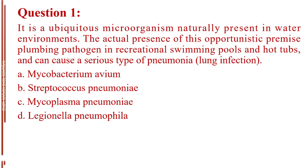Question number one. It is a ubiquitous microorganism naturally present in water environments. The actual presence of this opportunistic premise plumbing pathogen in recreational swimming pools and hot tubs can cause a serious type of pneumonia or lung infection. A. Mycobacterium avium. B. Streptococcus pneumoniae. C. Mycoplasma pneumoniae. D. Legionella pneumophila. The answer is Letter D, Legionella pneumophila.